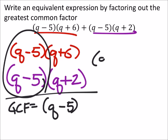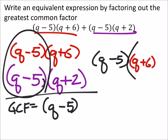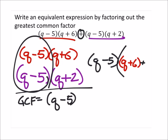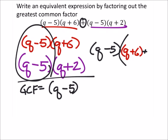When I write this out, I've got q minus five, and then what was left over from the red, which I should put in parentheses: q plus six. This was added to what was left from the purple, which is q plus two.